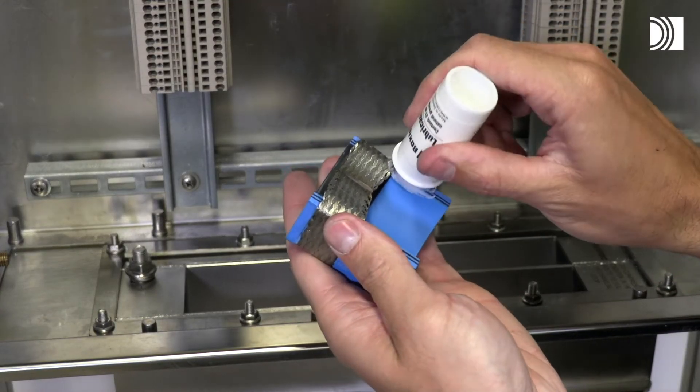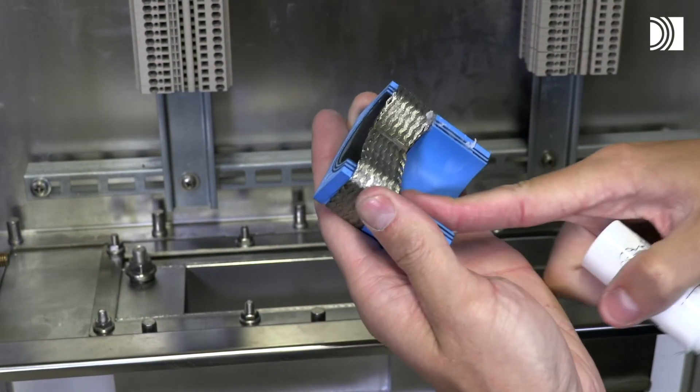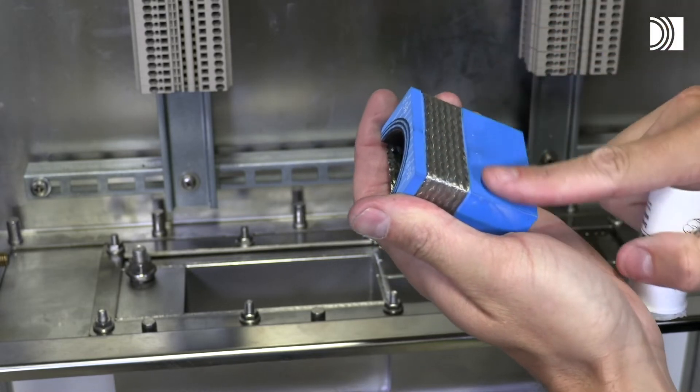Lubricate the sealing surfaces of all modules. Avoid excess lubricant on the braid. Remember to lubricate spare modules.